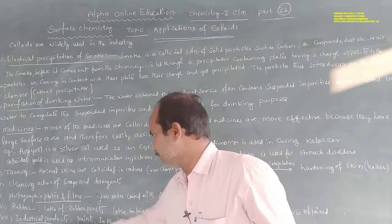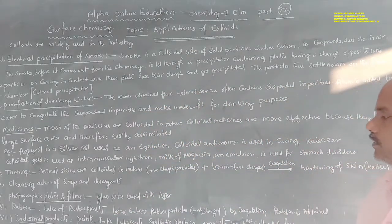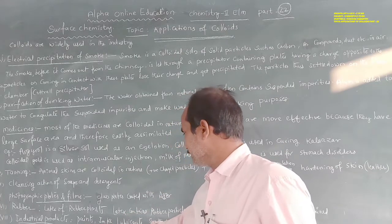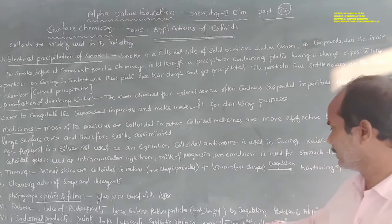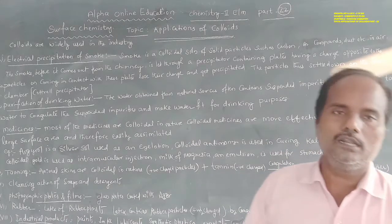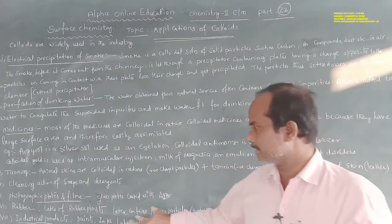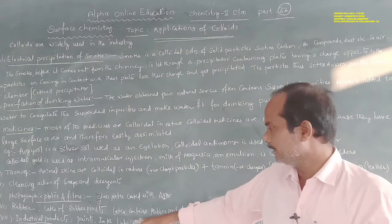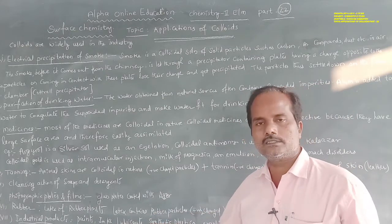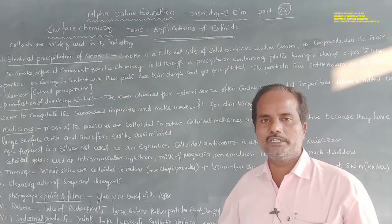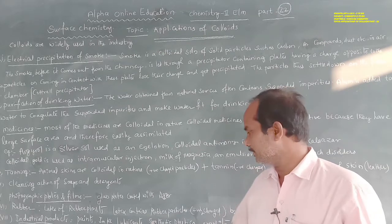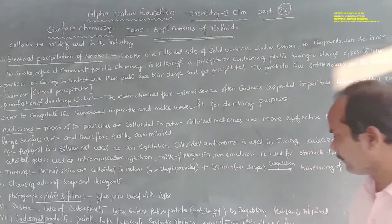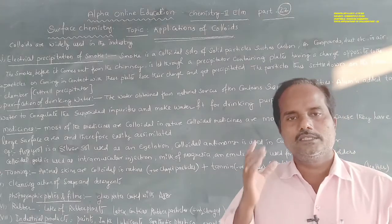The final application is industrial products. Most industrial products are in colloidal state, including paints, inks, lubricants, synthetic plastics, polymers, graphite, and cement. Lubricants are used in machinery parts to reduce friction. All these common products exist in colloidal form.